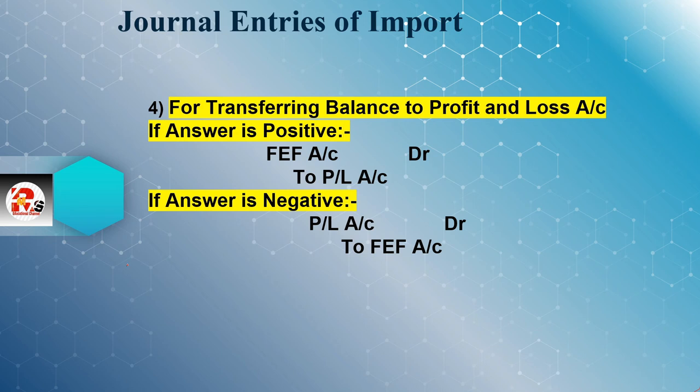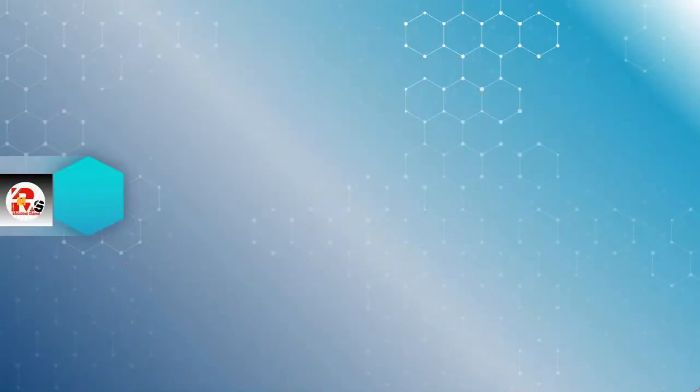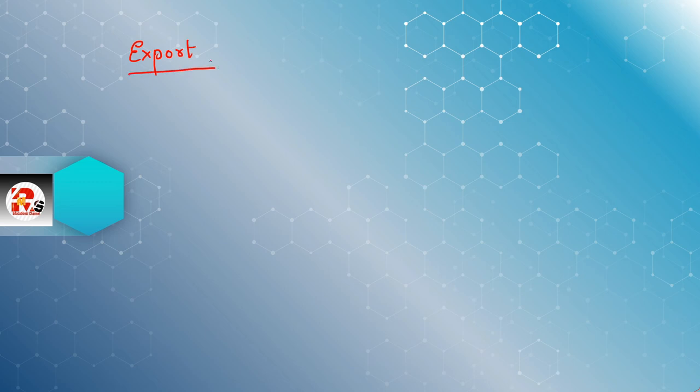These are all the journal entries you need to remember for import. Entry number one: purchases account debit to parties account. Entry number two for installment: bank account will always be credited — parties account debit to bank account. Let me write the basics of export and import side by side so it will be comfortable for you to remember these rules. Let us first revise export.